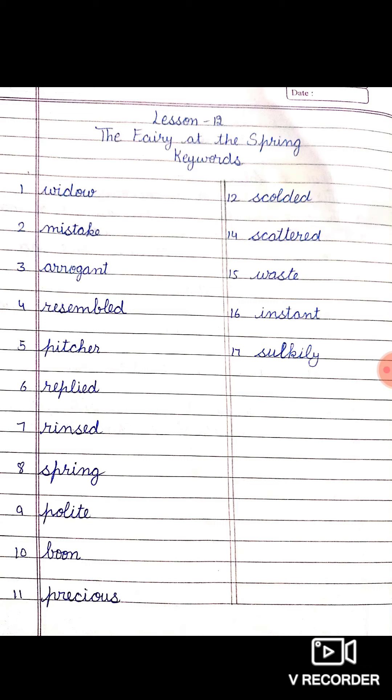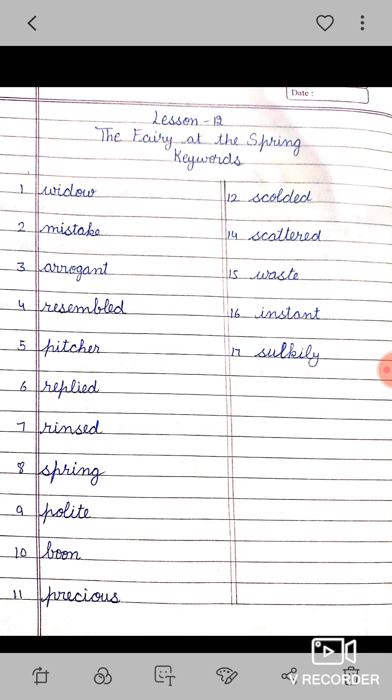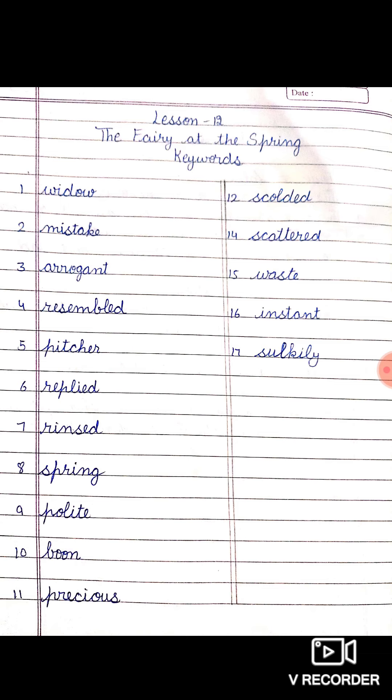Next is scalded. Scalded means blamed using angry words. Next is scattered. Scattered means thrown about. While speaking, the poor child told the simple tale of what had happened, and as she spoke she scattered diamonds right and left. Next, waste means useless.